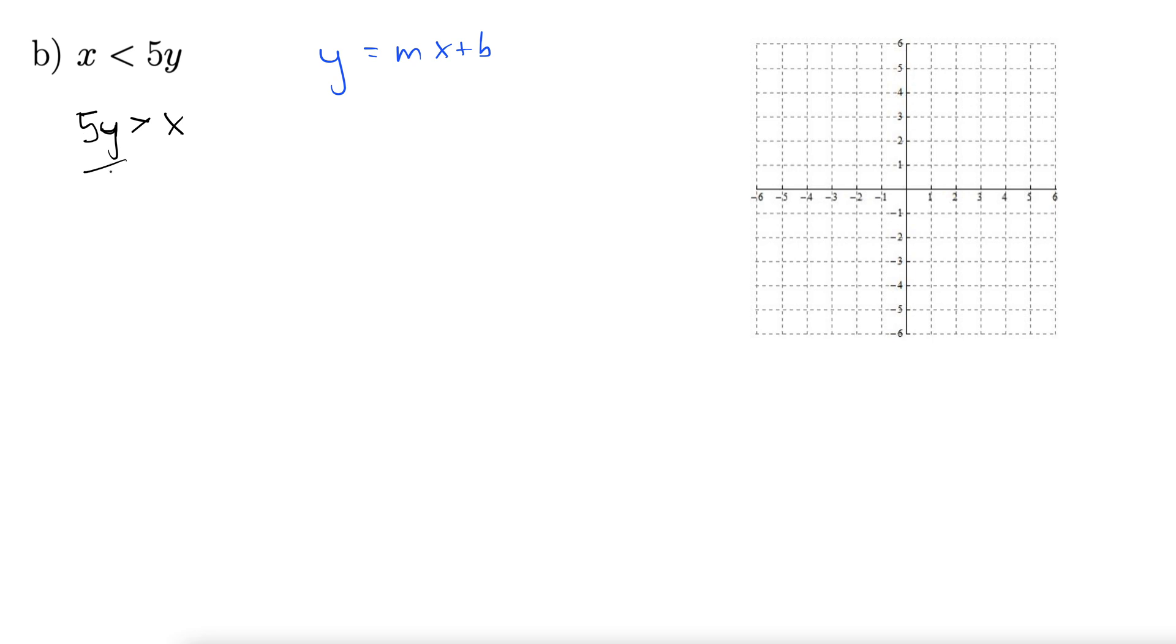And now we divide by 5, so we get y greater than, and I'm going to write this as 1 fifth x. Because that helps us really spot the slope. Here's our m, and we have nothing here, so that tells us that b equals 0. And again, this one goes to the origin. Anytime you don't have a constant term out to the side here when you get your line, your equation of a line, that means it goes to the origin.